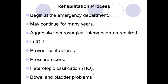Best motor response is scored 1–6: obeying commands (6), localizing pain (5), withdrawal from pain (4), abnormal flexion (3), abnormal extension (2), no response (1). The GCS total score is 15. A score of 12–15 indicates a minor injury, 9–11 is moderate, and anything below 9 is classified as a severe injury.